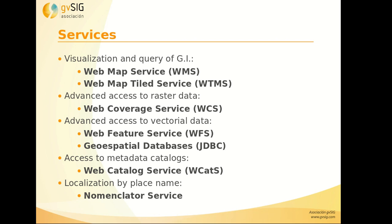For that type of accessing we also have geodatabases, for example PostGIS. And apart from them, there are two different services: the catalog, where we can access a list of cartography that is available to consult, and the location by place name, which is a nomenclator. With this service we can look for a town, street, etc. in a server, and we can get the location of that place name.